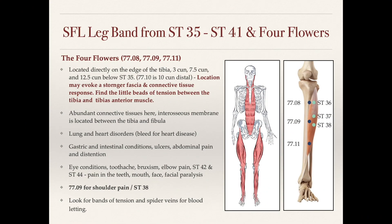Point 77.09 is also used for shoulder pain. In traditional points we use stomach 38 for shoulder pain, and it works best for lateral and anterior shoulder pain. Point 77.09 is essentially located on the same horizontal line — stomach 38 is eight sun below stomach 35 and then one sun lateral to the edge of the tibia, while 77.09 is traditionally located 7.5 sun below stomach 35 and on the edge of the tibia. Here we see this close relationship between these two points, both indicated for shoulder pain.